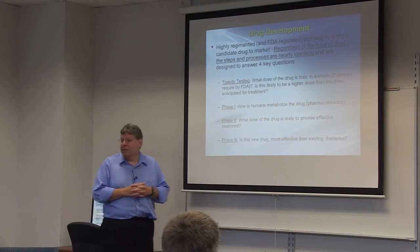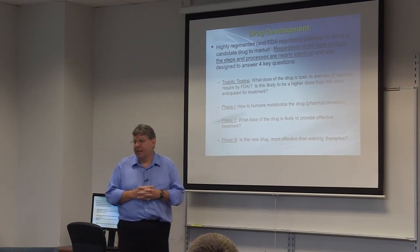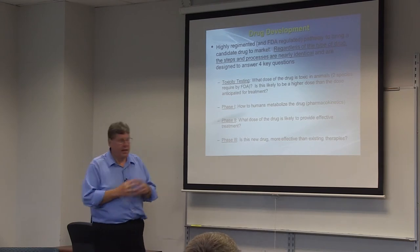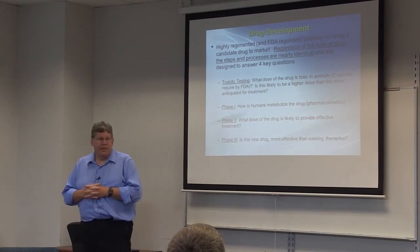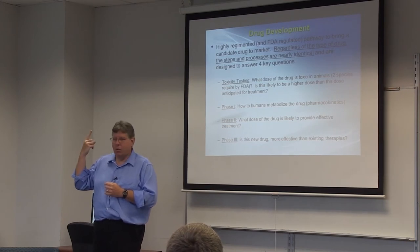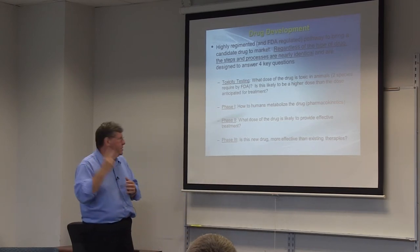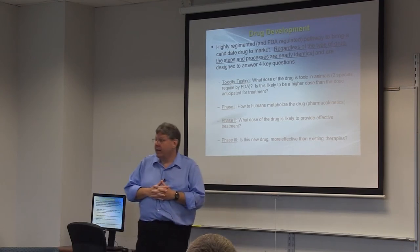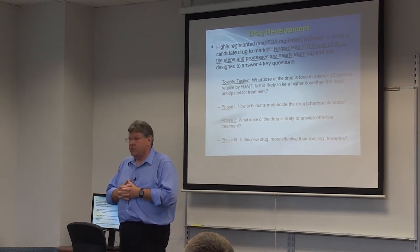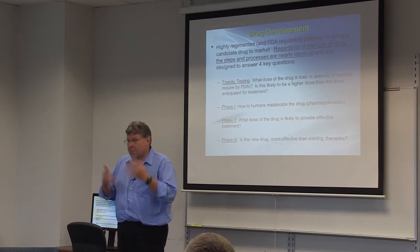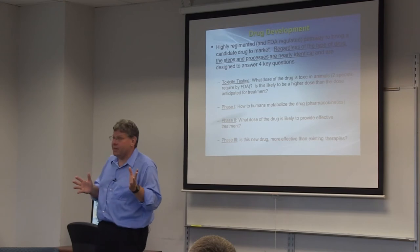Regardless of the type of drug, the steps and processes are nearly identical. They're basically broken into four types of questions. First, toxicity testing — is the drug toxic in non-humans? You can't test it in humans first; you have to show it's not toxic in non-humans. The FDA requires two species, and some rules apply: one may be a rodent, the other cannot be a rodent. It would be a really good idea if those were species well understood to the toxicology community, like rats, rabbits, and dogs — not a rare animal where toxicology is not well understood, like a ferret. It's allowed by the FDA, but it won't be accepted by the community.